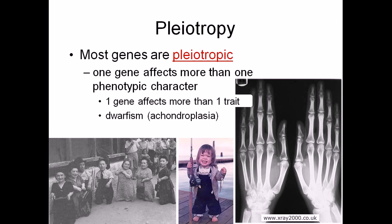Examples include achondroplasia, dwarfism, gigantism, and acromegaly. Both are effects of pleiotropy. In achondroplasia or dwarfism, many effects are shown by one particular gene — for example, small bone structure, low bone density, and small growth hormone production, among other things that together give you the achondroplasia symptoms.